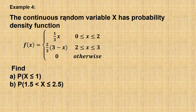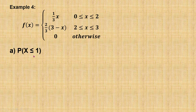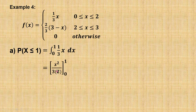Let's try this question: the continuous random variable x has a probability density function given. Find the probability where x is less than or equal to 1. Since there are two functions and we need to choose the correct one, x ≤ 1 falls in the interval from 0 to 2, so we use the first function and integrate from 0 to 1. Substituting x = 1 and x = 0, the probability is 1/6.